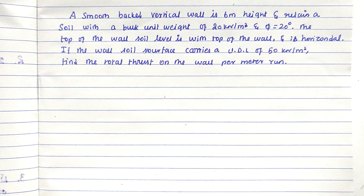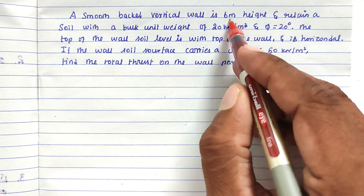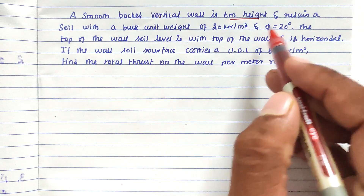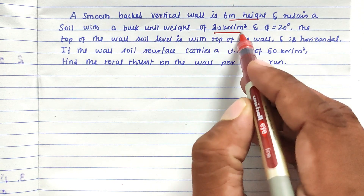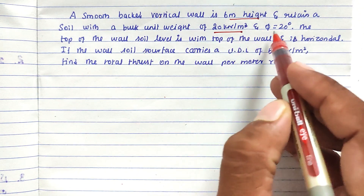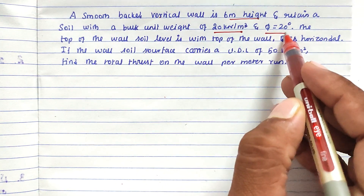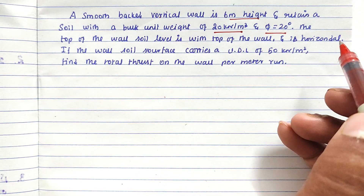Hello friends, welcome to our channel. Today we're going to see a problem related to soil mechanics in the topic of retaining wall. The problem is: a smooth-backed vertical wall is 6 meters in height and retains a soil with a bulk unit weight of 20 kilo Newton per meter cube, and phi equal to 20 degrees.